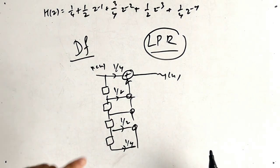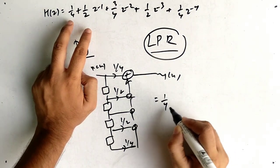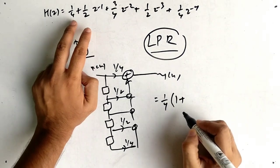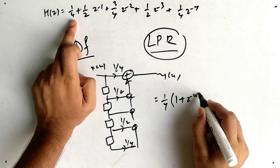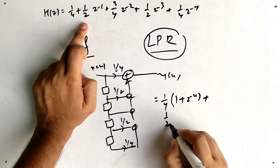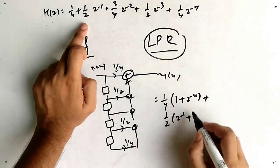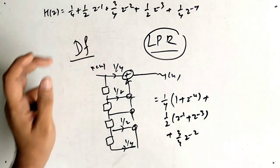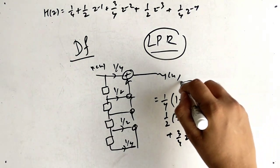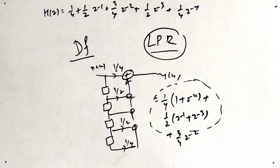We take 1/4 common with z⁻⁴, then 1/2 common from z⁻¹ + z⁻³, and the last term is (3/4)z⁻². By grouping symmetric terms this way, we save multipliers. Let's see how to draw this.